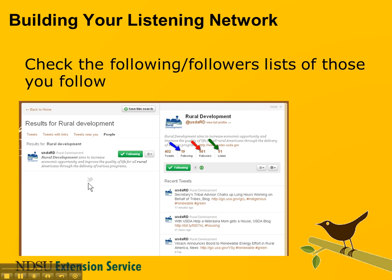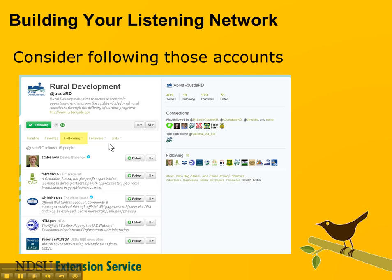Another way to build your listening network is to take the people and accounts that you already follow and look at who they are following, who's following them, and what Twitter lists their accounts are listed on. The example here is USDA Rural Development. When we click on their account, right up here we can see how many people they're following, how many people are following them, and how many lists their account appears on. If I want to look at who they're following, I just click on the number with the blue arrow, and it takes me to a list of who USDA Rural Development is following.